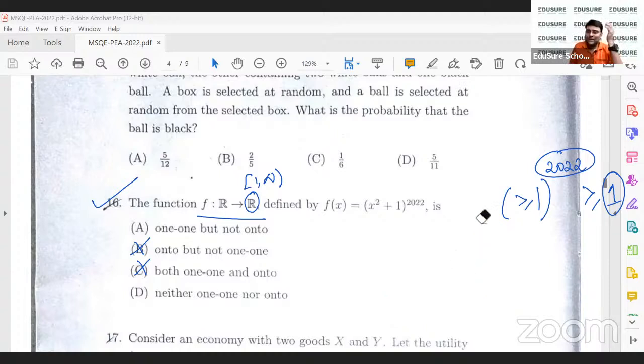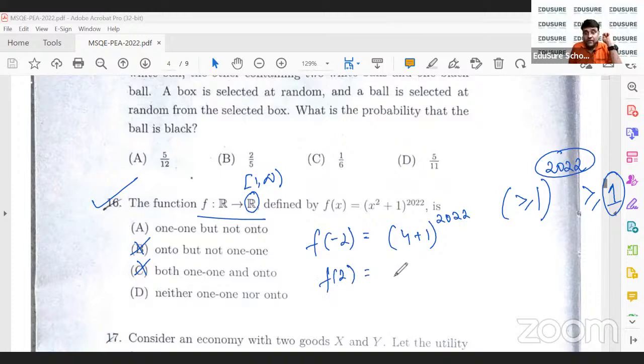So what's happening here? Let's take this example. f of minus 2 will be minus 2 square plus 1 to the power 2022. And f of 2 will be 2 square 4 plus 1 to the power 2022. So here f minus 2 and f2 are both going to the same value. So it is not 1 to 1 also. So it is neither 1 to 1 nor onto. D is the answer.